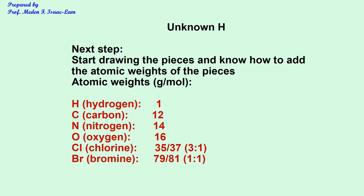The next step is to draw the pieces and know how to add the atomic weights. The atomic weights are: hydrogen = 1, carbon = 12, nitrogen = 14, oxygen = 16. These are the most abundant isotopes of H, C, N, and O.